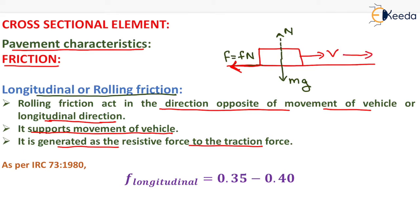As per IRC 73-1980, the value of the coefficient of longitudinal friction ranges between 0.35 to 0.40. This value is very important for all government competitive exams as well as from the GATE point of view.